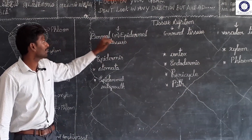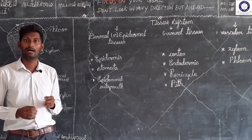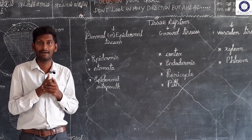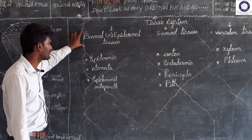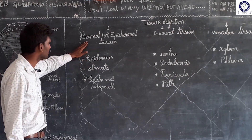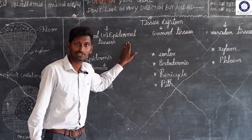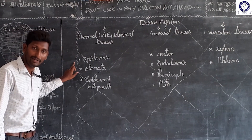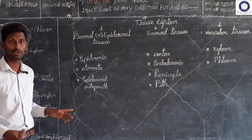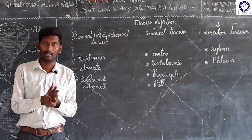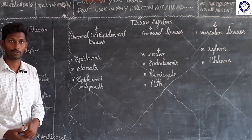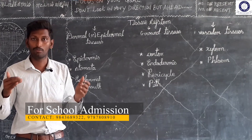The dermal or epidermal tissue system refers to the outermost skin — the outermost layer of the plant. The dermal or epidermal tissue system includes epidermis, stomata, epidermal outgrowths, and cuticle. The root has epidermal outgrowths. Epidermis is the outermost layer.